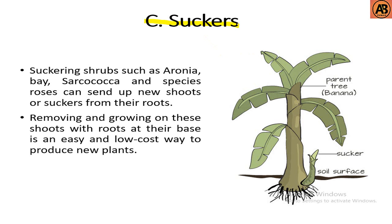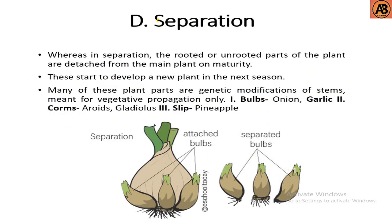Next is sucker, also an asexual propagation type. Suckering shrubs such as Aronia, Bay, Sarcococca, and species roses can send up new shoots or suckers from their roots. Removing and growing on these shoots with roots at their base is an easy and low-cost way to produce new plants, such as banana. In the picture we can see the sucker produced from the side of root — this is the process of asexual sucker propagation.